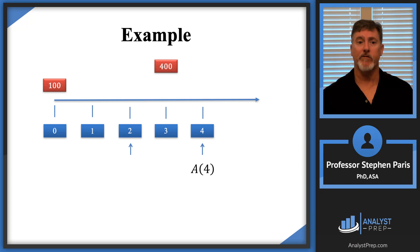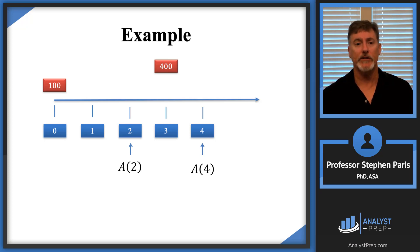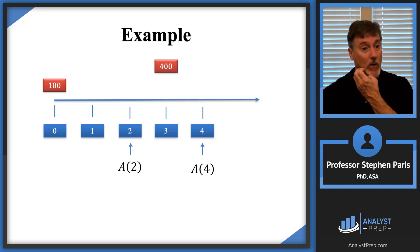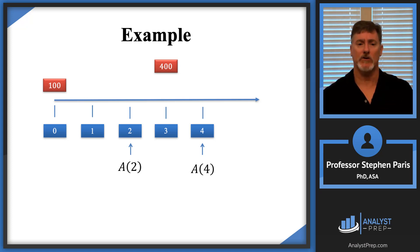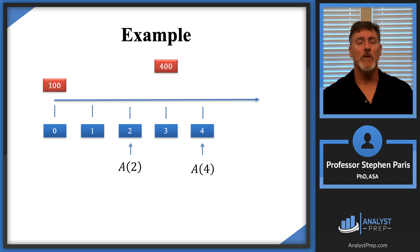The amount at time 4 is going to be more than the amount at time 2. The difference between those two amounts can be accounted for by two things: the interest earned on the money in the account, plus any extra deposits made in that interval. So the difference between the two amounts equals extra deposits into the account plus interest earned. Let's capture that in an equation.